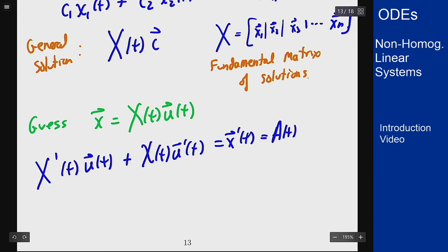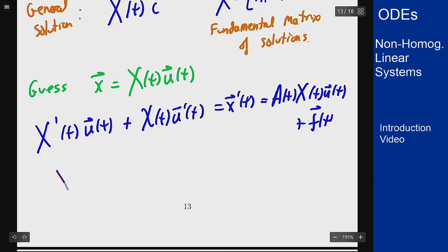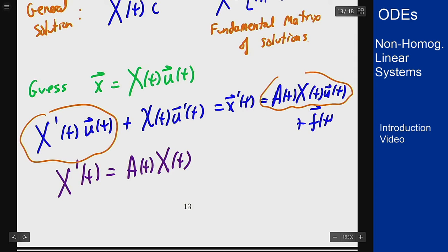So A times big X times u(t) plus f. Now based on how X is built, since each column of X solves the homogeneous problem we know that big X'(t) is the same as A times big X(t) because they all solve the homogeneous problem, which then means that this term here and this term here cancel out.